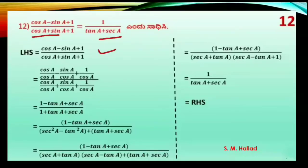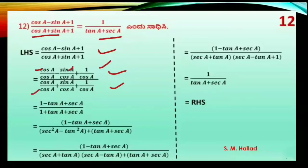LHS is the same thing. We divide through by cos: cos divided by cos, sin divided by cos, plus 1 divided by cos — in the numerator. Similarly in the denominator: cos divided by cos, sin divided by cos, 1 divided by cos.